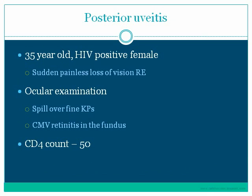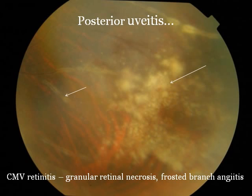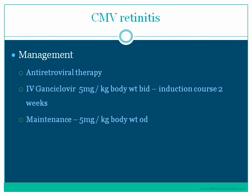A 35-year-old HIV-positive female complained of sudden painless loss of vision in the right eye. Ocular examination revealed spillover anterior uveitis and CMV retinitis in the fundus, with a CD4 count as low as 50. The fundus picture shows granular retinal necrosis and frosted branch angiitis. Diagnosis was made based on the pattern of the lesion, and management consisted of antiretroviral therapy, IV ganciclovir as an induction course, followed by maintenance dose.